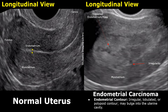You can see these irregular borders of the mass, and it also has a heterogeneous appearance which indicates carcinoma. This area is more irregular and indicates myometrial invasion — another feature of aggressive disease.